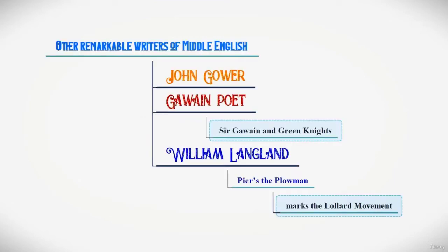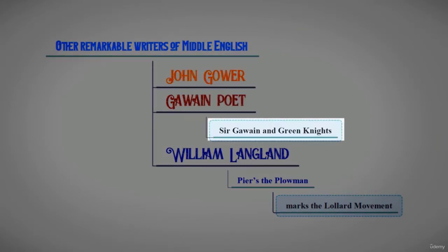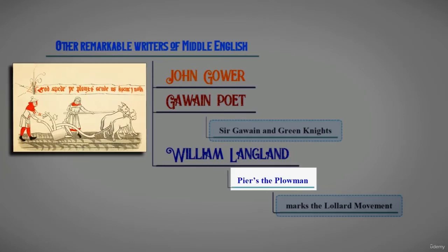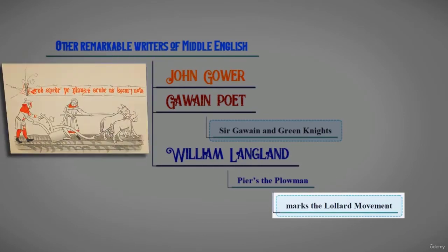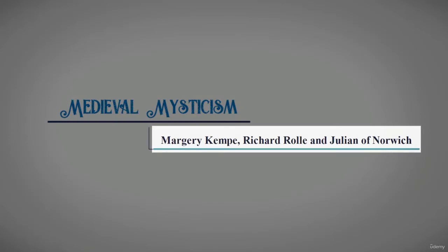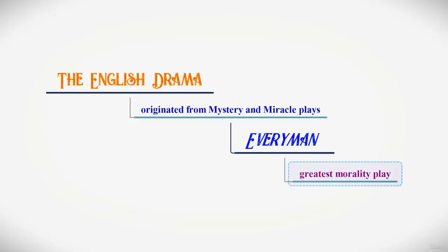Other remarkable writers of this age were John Gower, the Gawain Poet who wrote Sir Gawain and the Green Knight, and William Langland whose Piers the Ploughman marks an important literary moment. Works of Margery Kempe, Richard Rolle, and Julian of Norwich featured medieval mysticism.